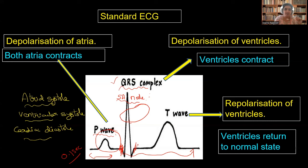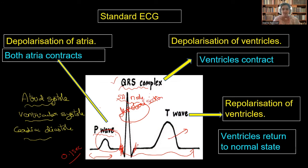In the QRS complex, depolarization of the ventricles occurs. Here, repolarization of the ventricles is occurring — the ventricles start relaxing. So at the end of the T wave, ventricle relaxation starts, and it proceeds for about 0.3 seconds.